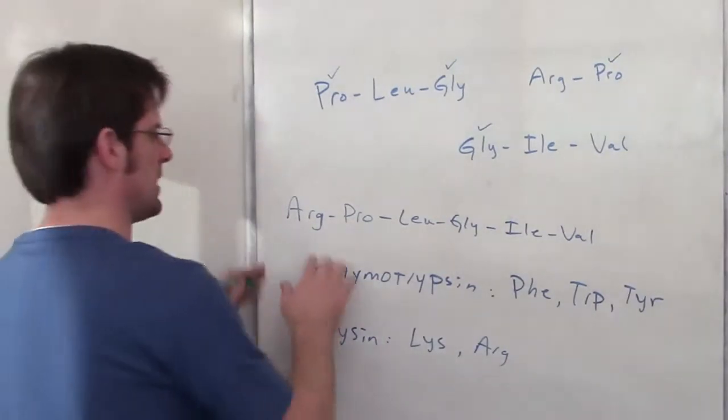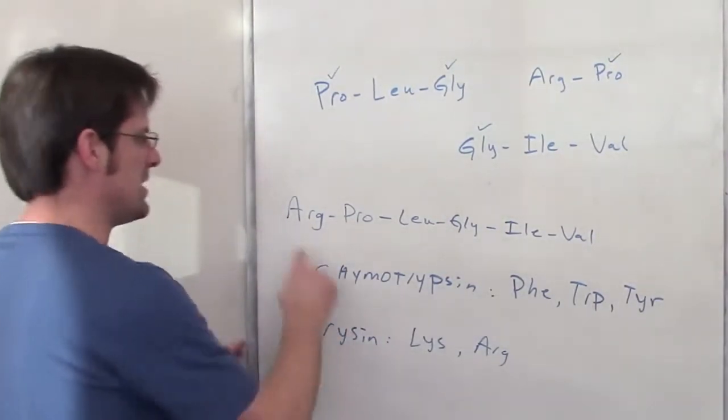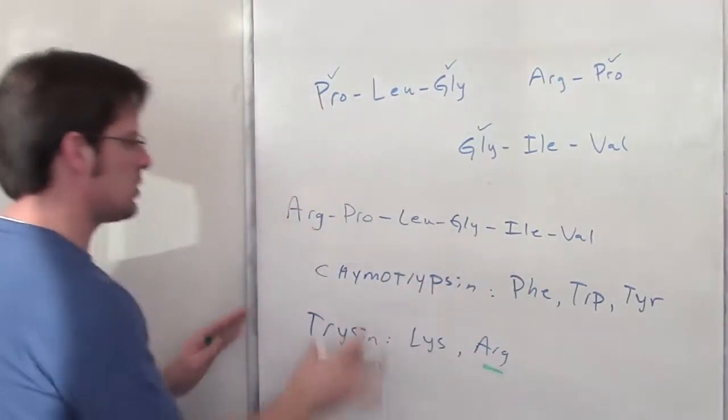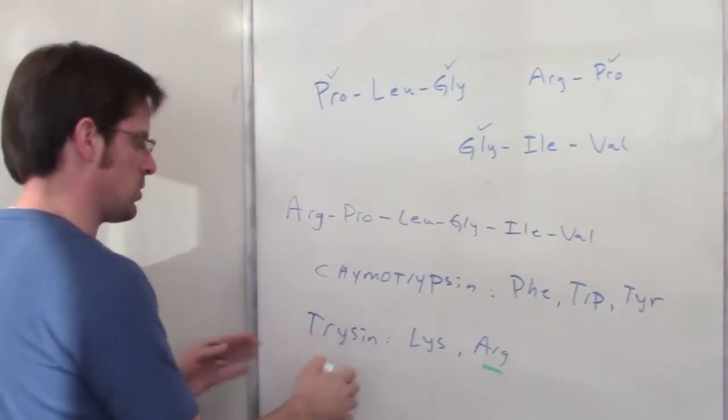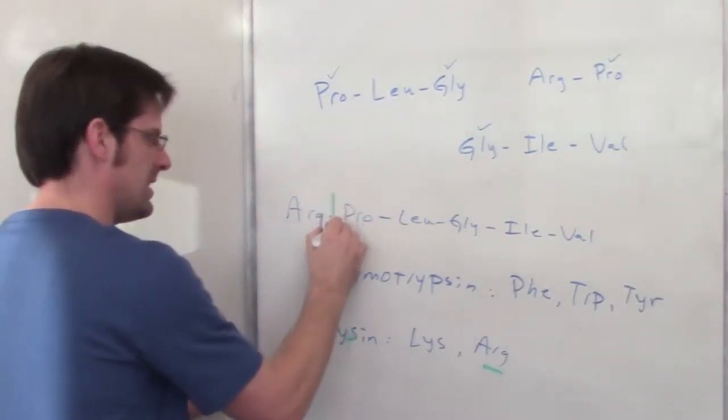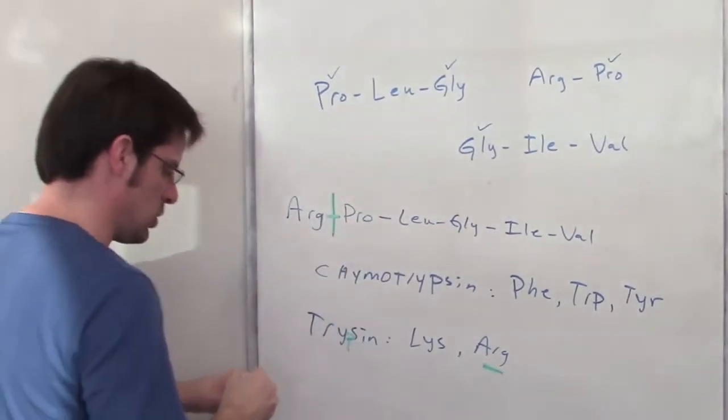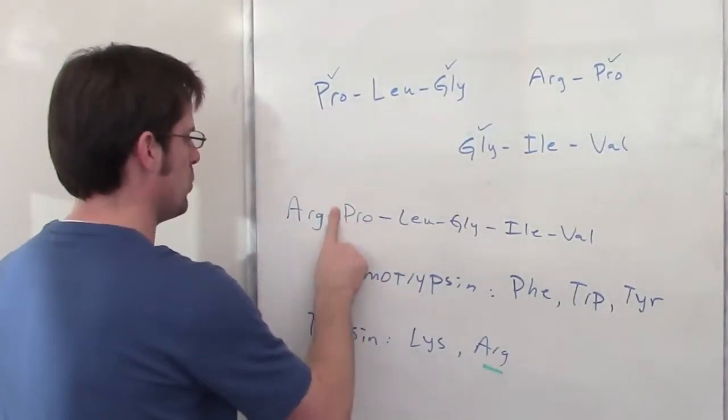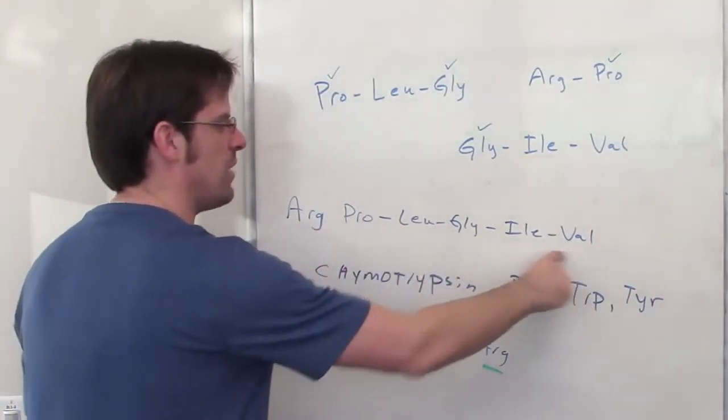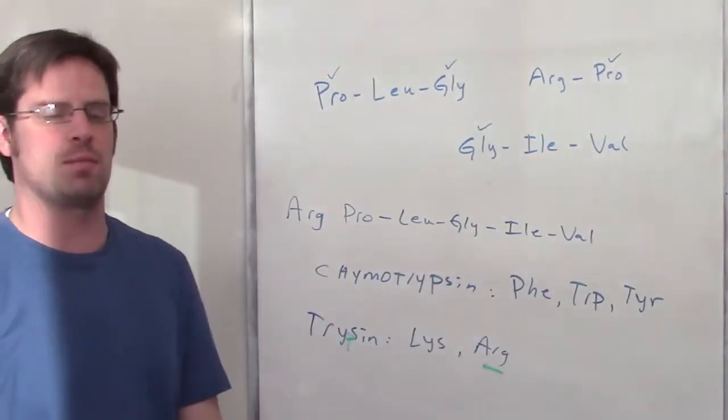Now what if you subjected this to trypsin? Do we see any of those amino acids here? Well, the only one we see is arginine. So if we took this peptide and treated it with trypsin, it would cleave on the carboxyl end of arginine, giving you two fragments. One would be arginine by itself, and the other would be this 5-amino acid fragment.